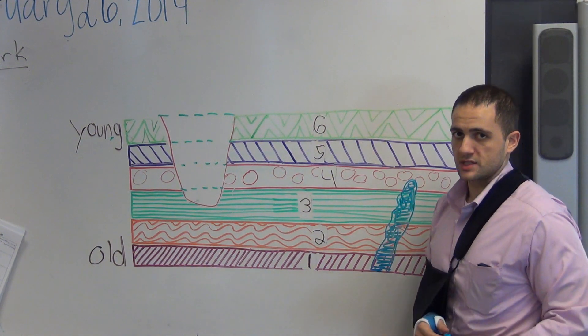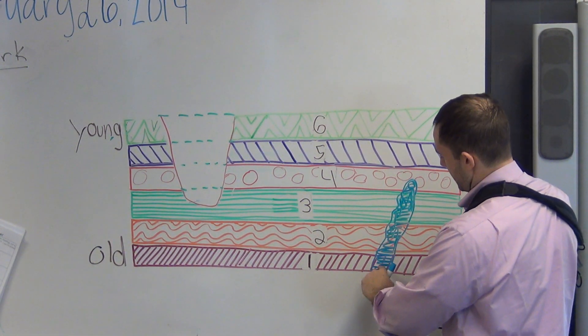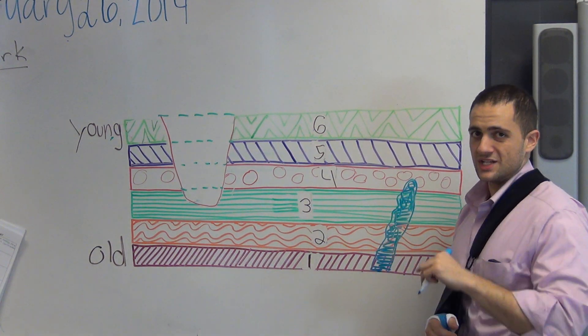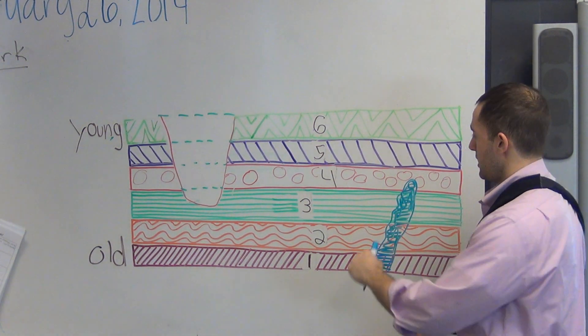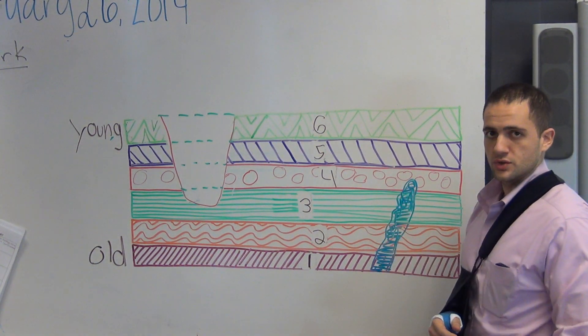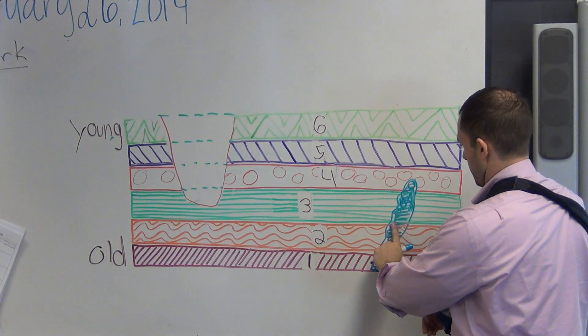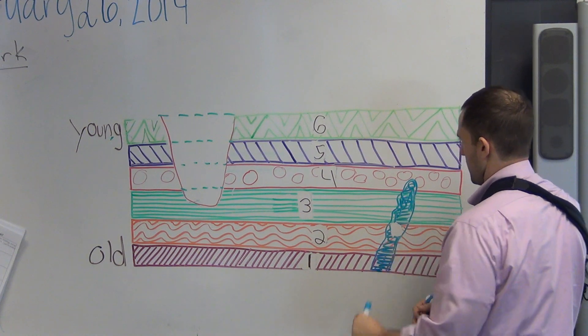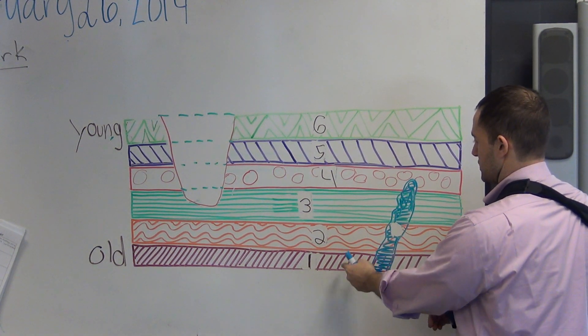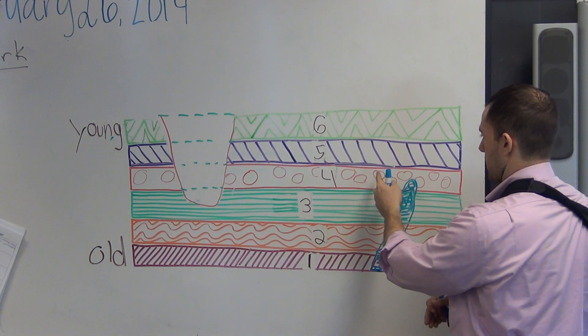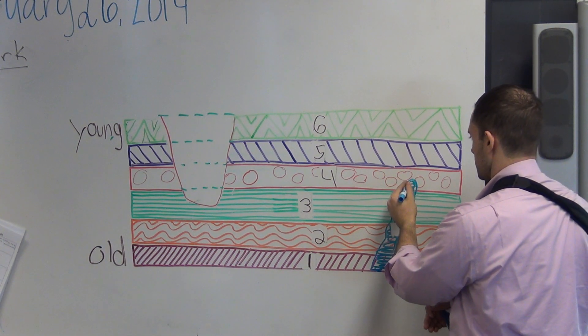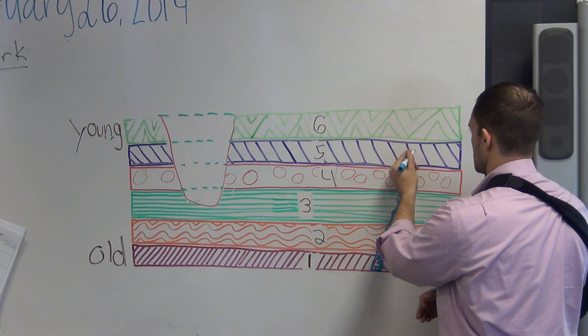Now the law of cross-cutting relations says that this feature is younger than the layers that it goes through. So if we have events one, two, three, four—these four came here. Let's just draw this to the top.